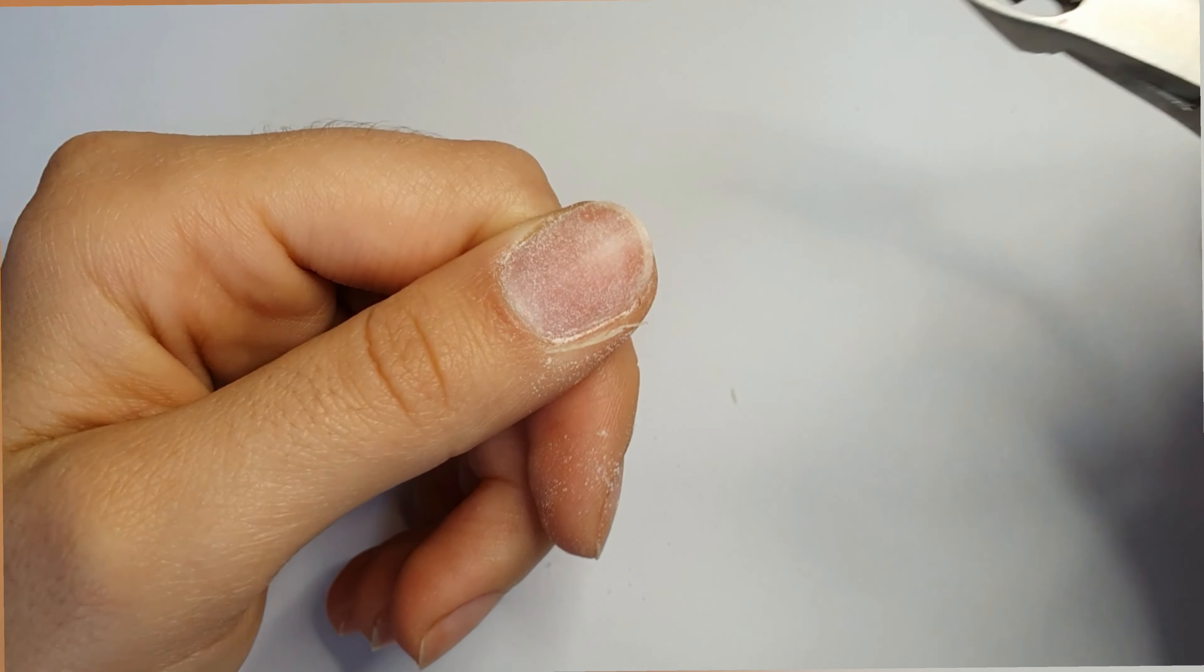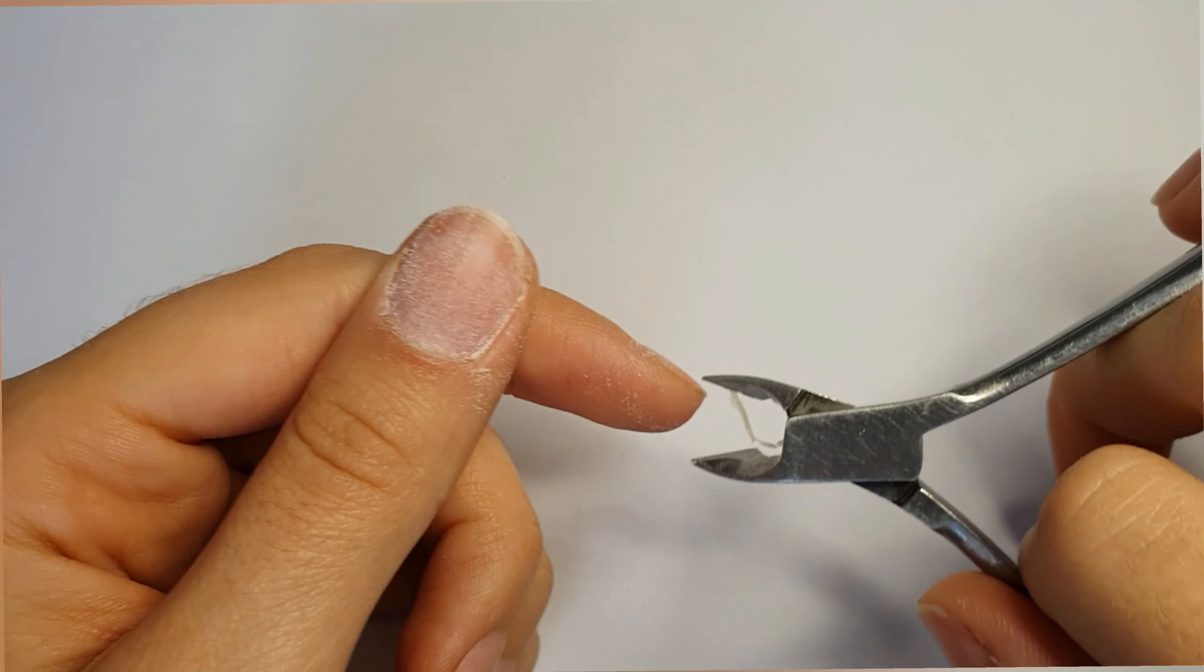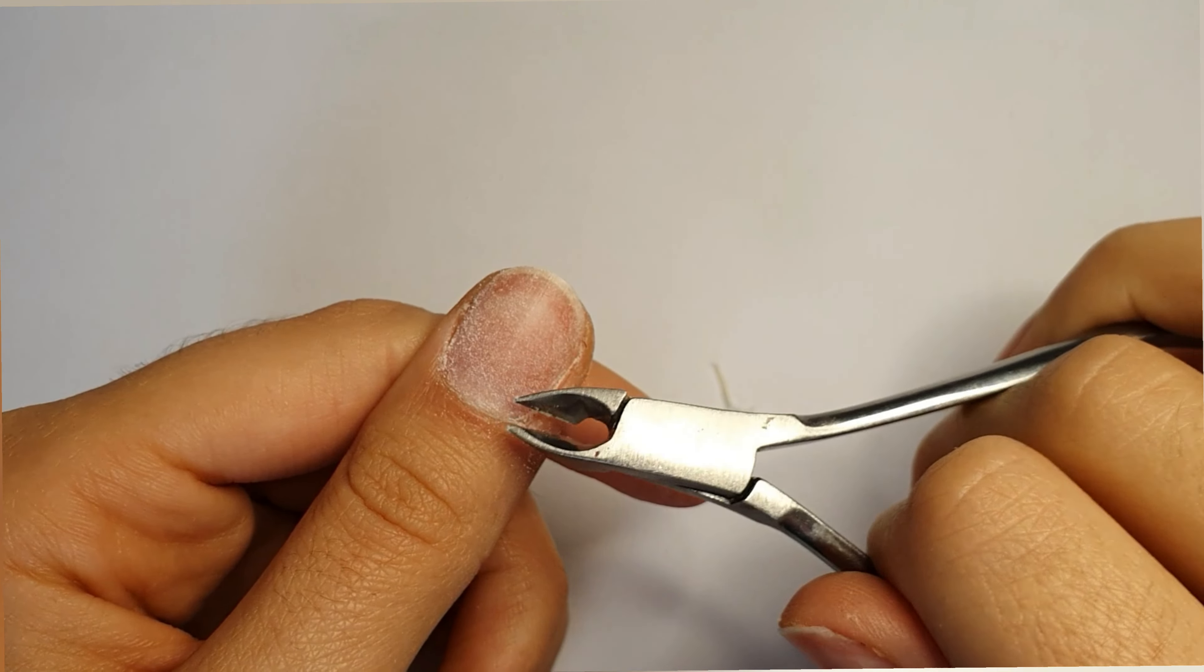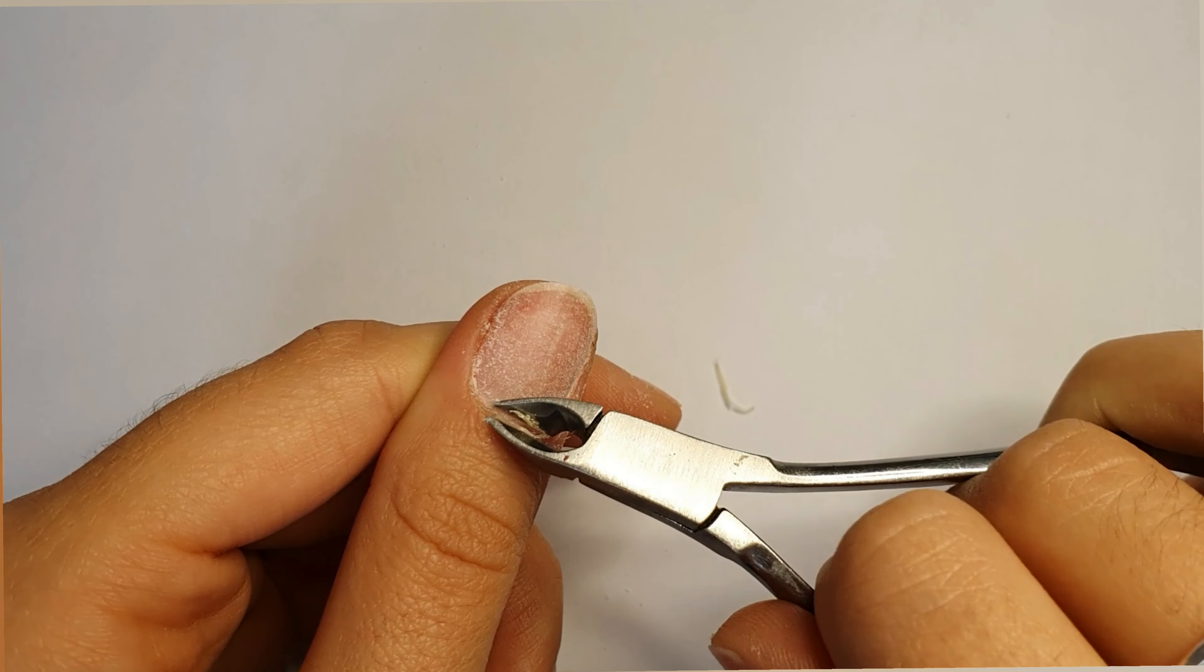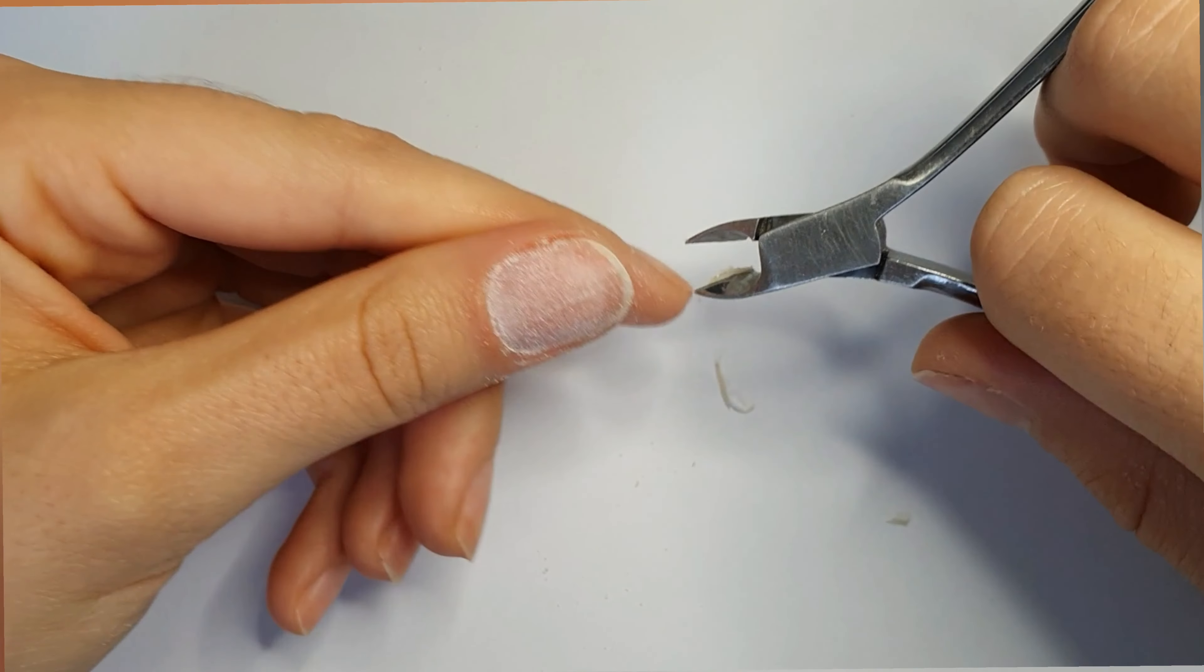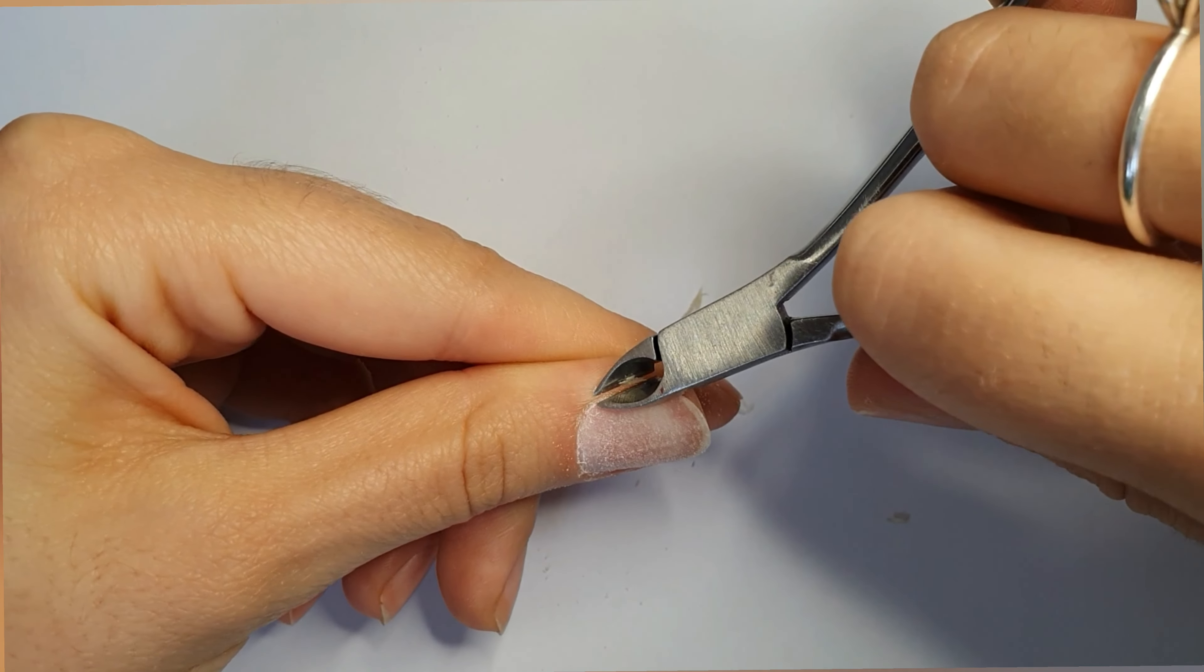Now I'm going to use a cuticle cutter. This is a very important step because it is very important that you cut the cuticles around your nails because it will be easier to apply all the products that you are going to apply after nail preparation.